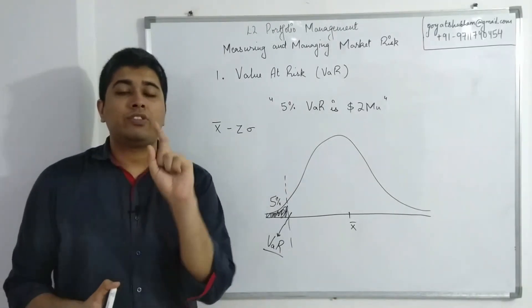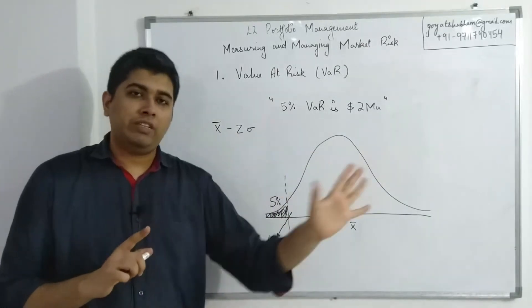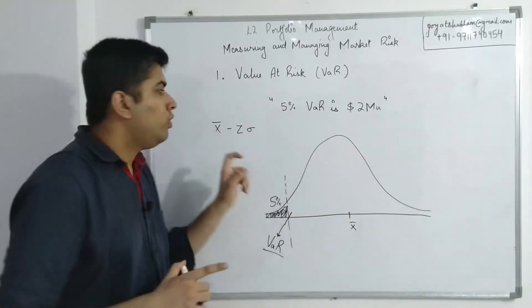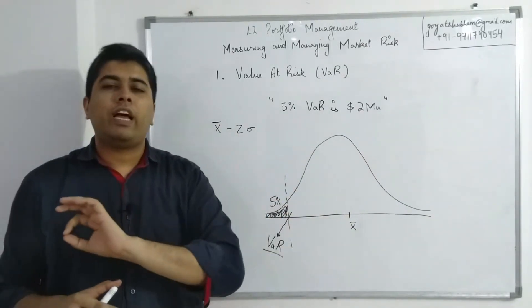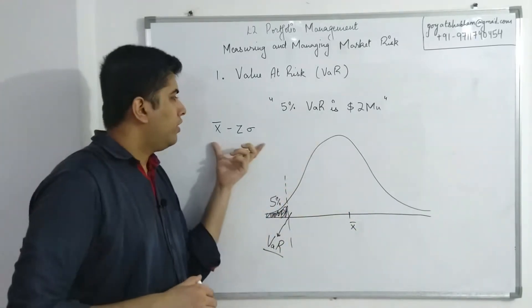This is a notation that you have done countless number of times. This is the same notation of confidence interval. The only difference is in confidence interval we have both plus and minus; here we only have minus. It's a one-tail test.